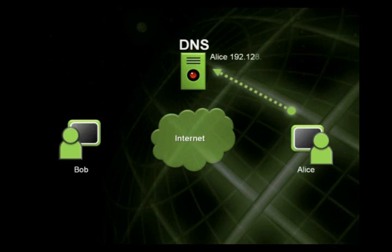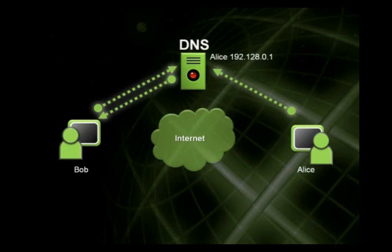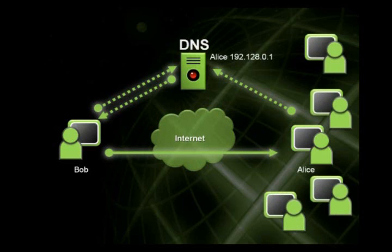If you're not familiar with that, what would basically happen is Bob is interested in talking to Alice. When Alice comes online, she'd go out to the dynamic DNS server and register — hey, I'm Alice, and here's my IP address. Then Bob could go and ask for Alice's IP address, and if she has one, he can go and talk to her directly.